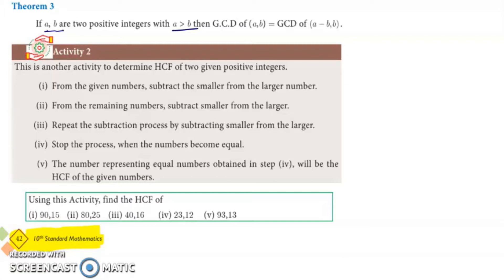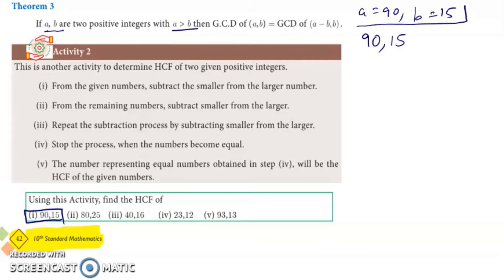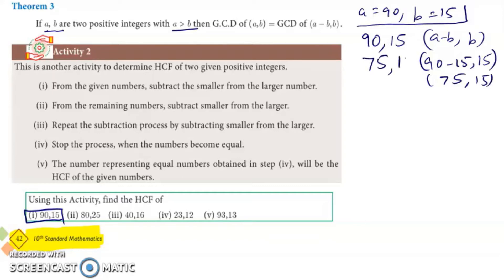Let's take an example to understand. We'll take the two numbers 19 and 15. According to the theorem, our a is 19 and our b is 15. The GCD of these two numbers should be the same as the GCD of a minus b and b. So a minus b is 19 minus 15, giving us 4, and b is 15. So this will be 4 and 15.